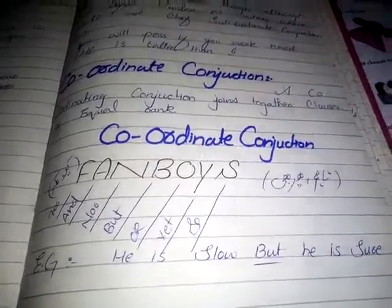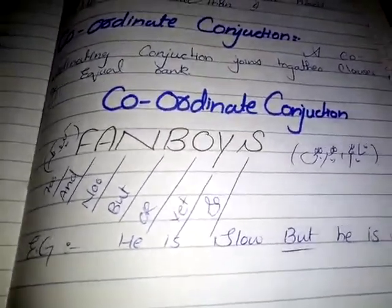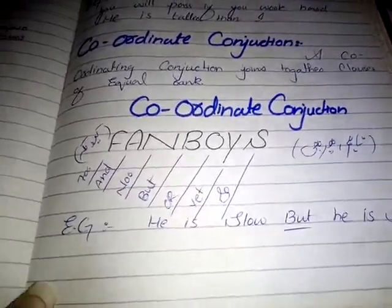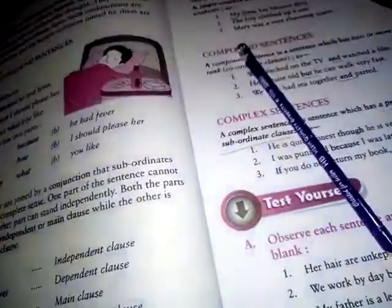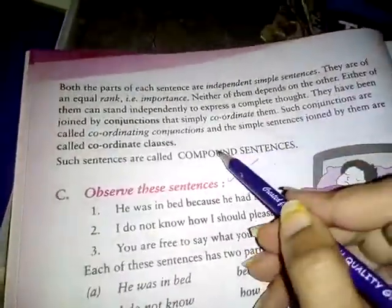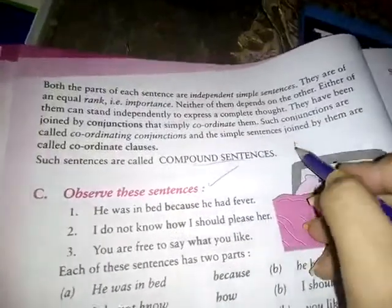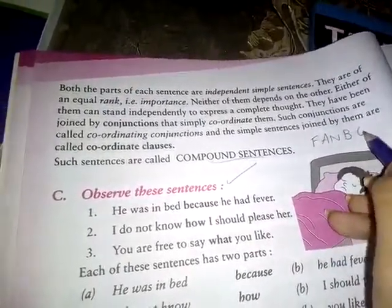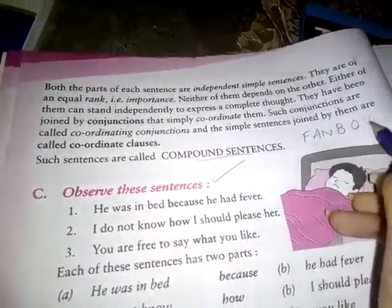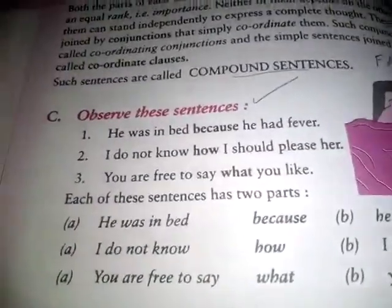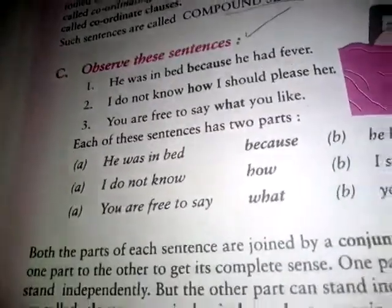जब हम coordinating conjunctions use करते हैं तो हम FANBOYS का formula use करते हैं। Compound sentences में हम FANBOYS का formula utilize करते हैं। यह होंगे हमारे compound sentences।